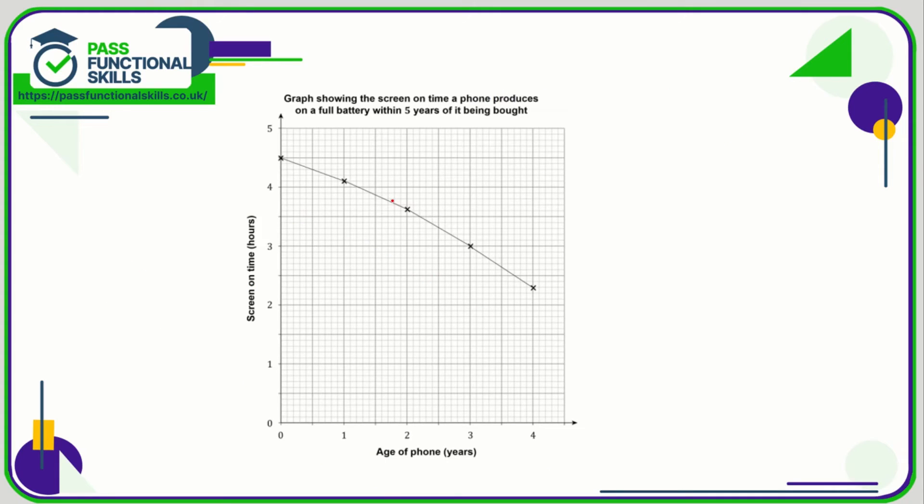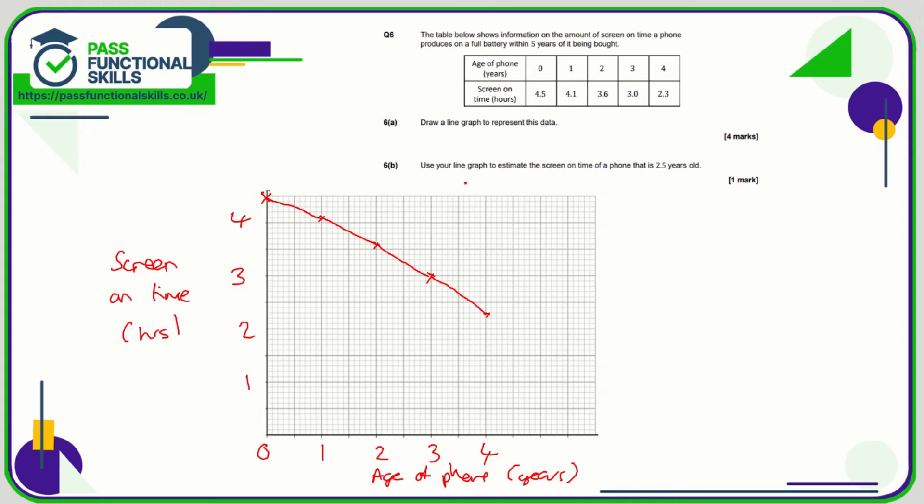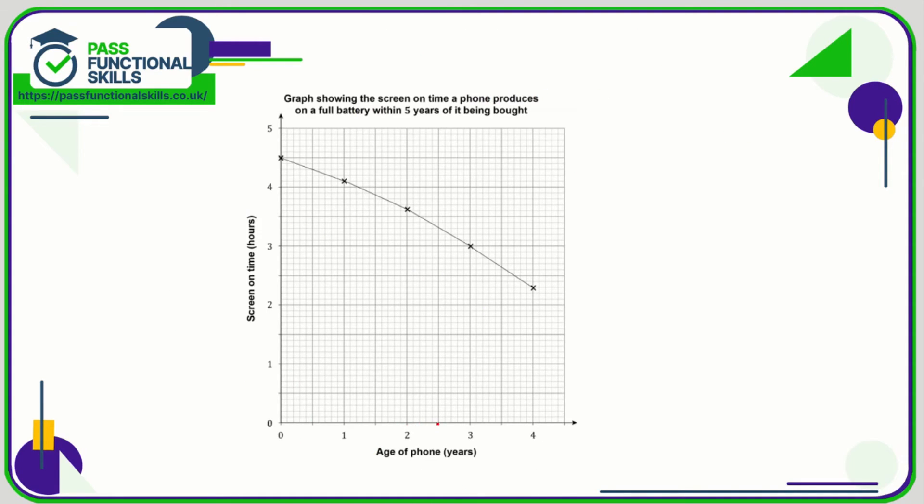The mark scheme shows it fairly similar, although interestingly they had a slightly bigger bit of graph paper, so they were able to go up to 5 hours there. Part B says we need to use the line graph to estimate the screen on time of a phone that is 2.5 years old. So I'm going to use the one in the mark scheme as it's slightly more accurate. All we need to do is go across to 2.5, and we're going to go up and see where it hits the line. It hits the line here, and we're just going to take a reading across. It's difficult to get this absolutely spot on, so usually there is a bit of leeway in the mark scheme. So here's 3, 3.1, 3.2, 3.3. So I'd say that's 3.3 hours. I think 3.4 hours would probably be accepted as well, perhaps. But I'm pretty confident that 3.3 hours is probably the best answer here.